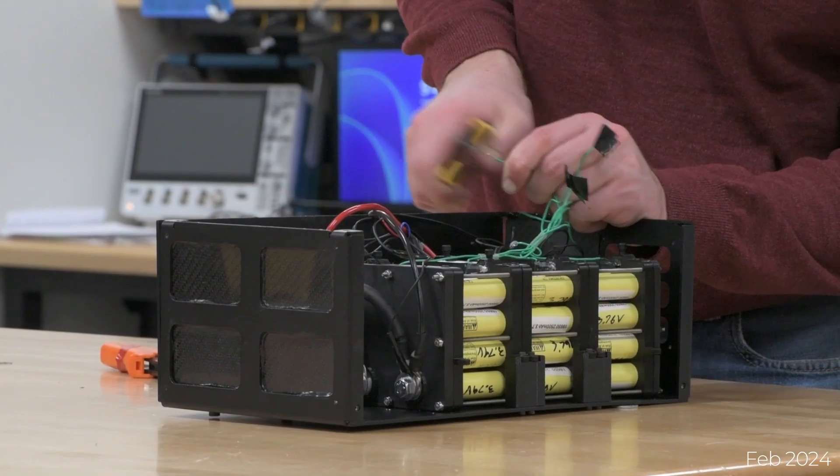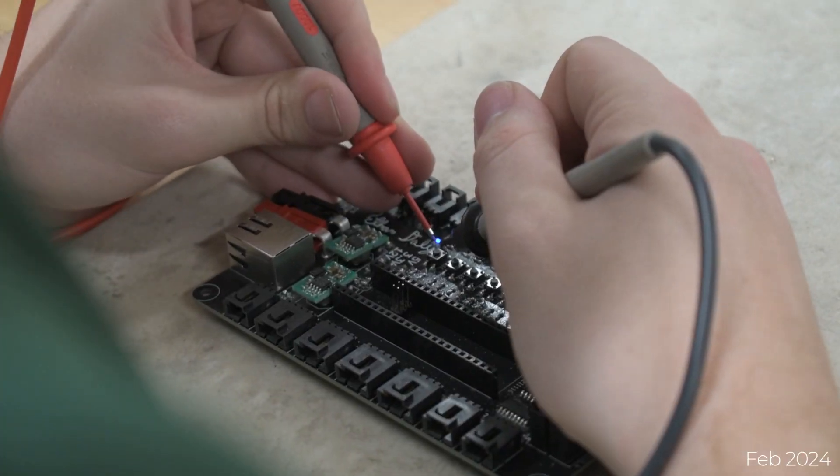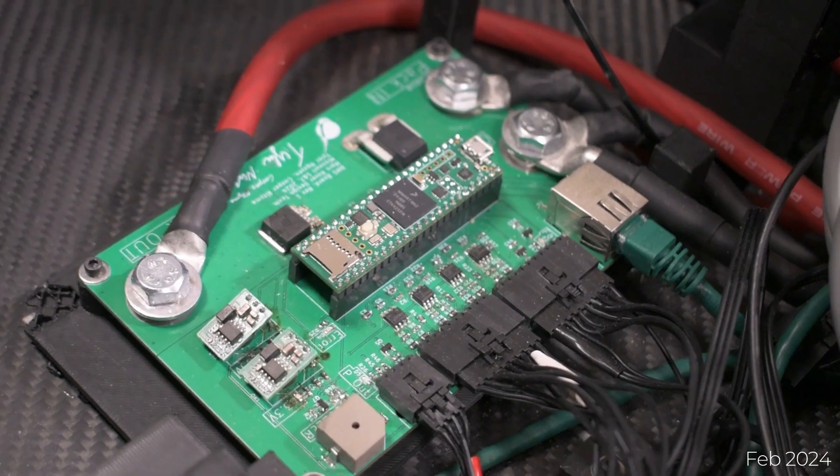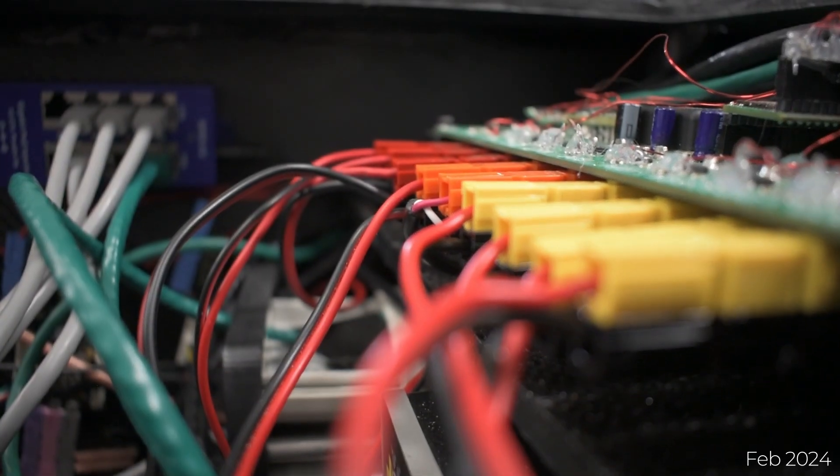Powered by a custom 6S8P battery, Hyperion's distributed electrical architecture includes individual cell voltage, current, and temperature sensing. The power distribution system offers current sensing for each power connection on the rover.